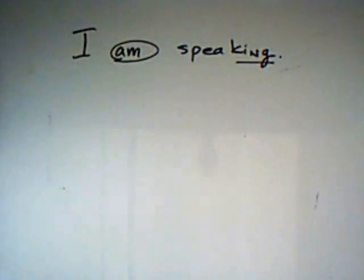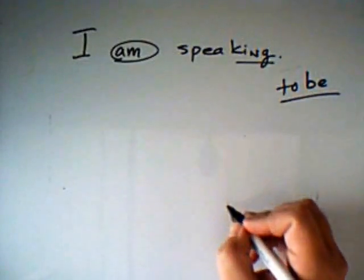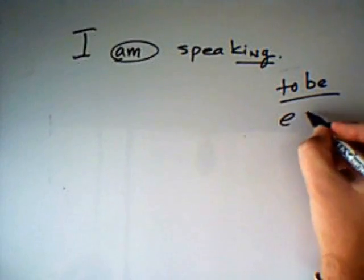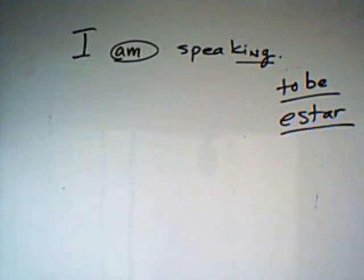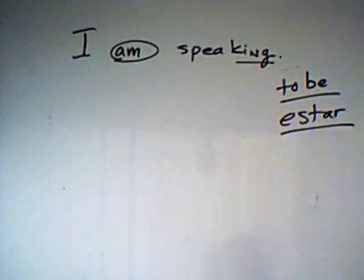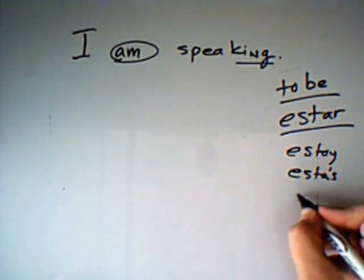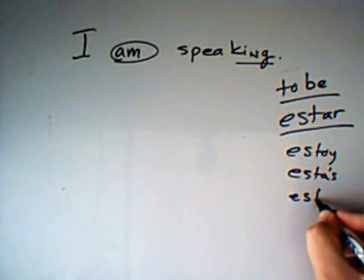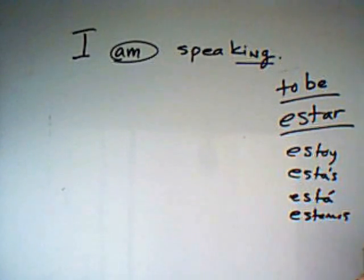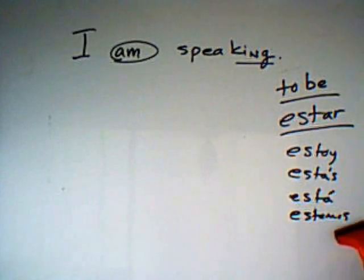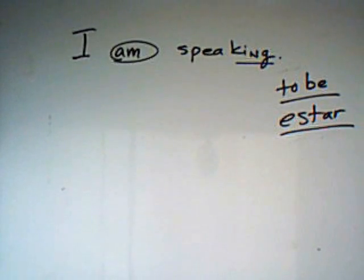I am speaking. The equivalent of the verb 'to be' that we're going to use in Spanish to form these compound tenses is estar. So you need to remember how to conjugate estar: yo estoy, tú estás, él or ella está, estamos, etc. Keep in mind that these compound tenses can use the present form of estar, or a past form of estar, or even a future form of estar — 'I will be speaking.'